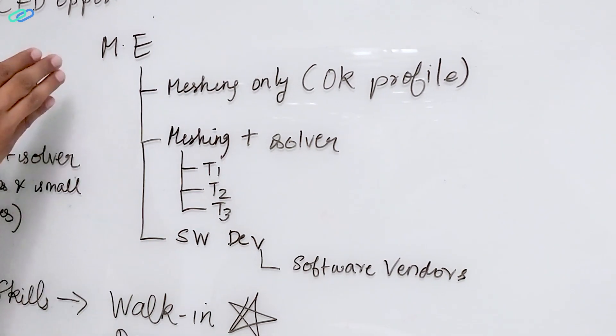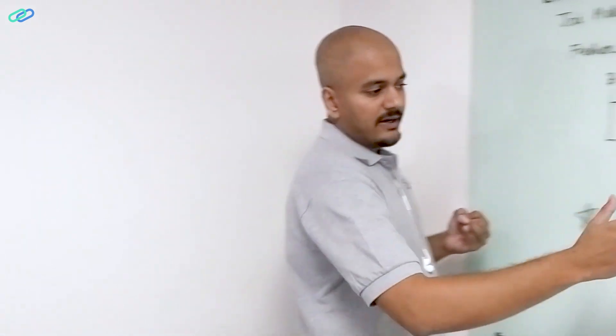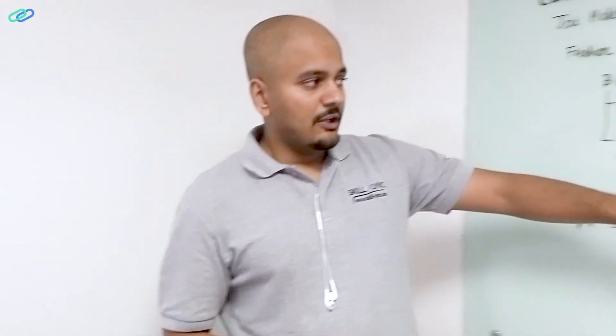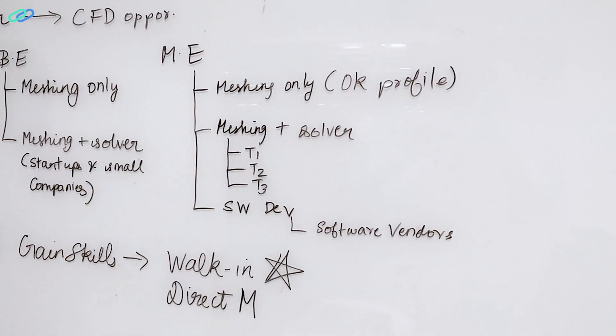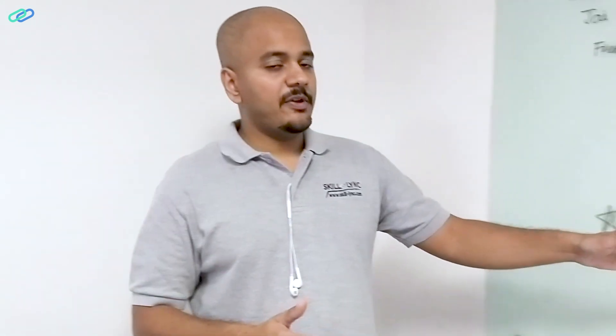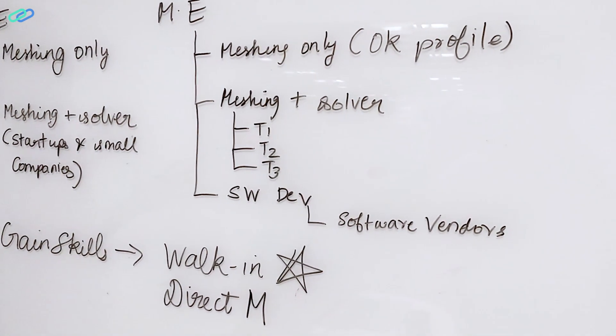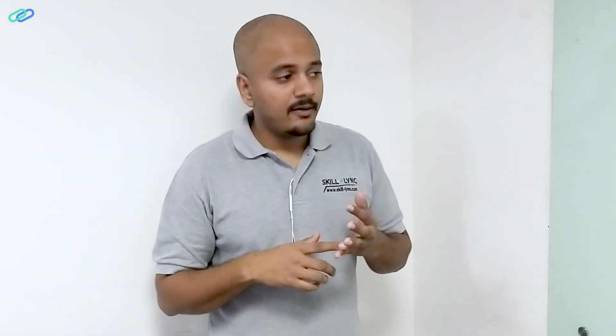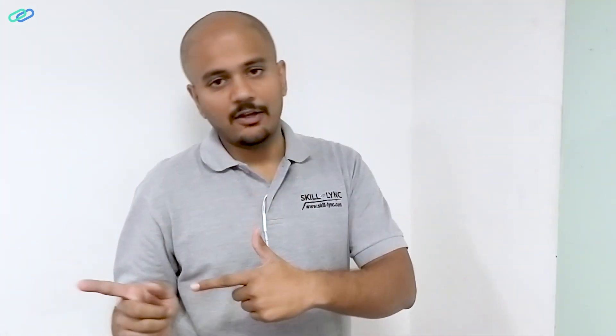Another type of opportunity, primarily for people with ME and above — so either M-Tech or PhD — is called a software development job. This is where you write computer programs to develop the CFD solver. To get this type of job you should have an excellent M-Tech profile plus one or two publications minimum, demonstrating your ability to write computer programs for fluid simulations. If you're a PhD student specializing in CFD, that becomes fairly straightforward. You can get jobs at companies like Altair, Convergence Science, or even Ansys, because they develop these products.